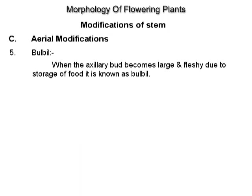Bulbil. When the axillary bud becomes large and fleshy due to storage of food, it is known as a bulbil. Example: Dioscorea.